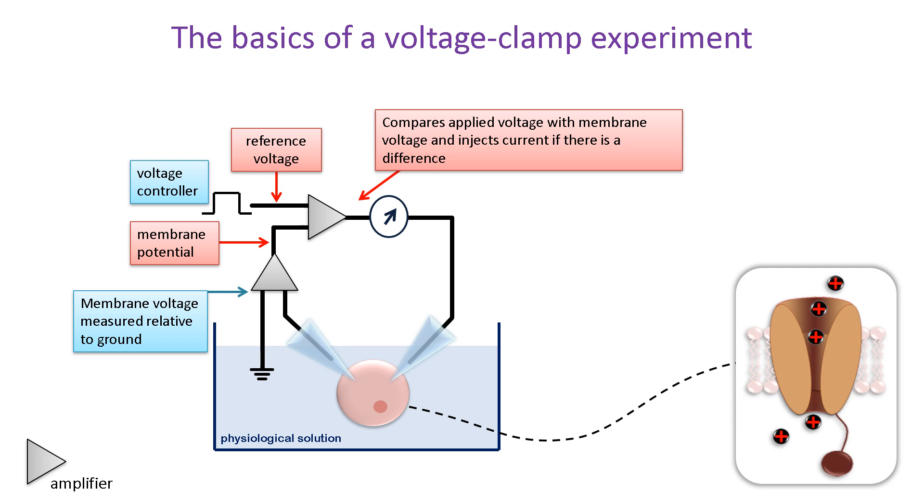This happens instantaneously, so the membrane voltage is effectively clamped at the reference level. The current injected into the cell is equal in magnitude but opposite in direction to the currents flowing through open ion channels. So, this is the current recorded in voltage clamp experiments. The same principles apply in single electrode voltage clamp and patch clamp experiments, except that the voltage clamp is achieved with a single electrode.